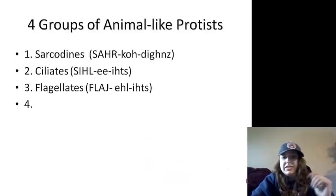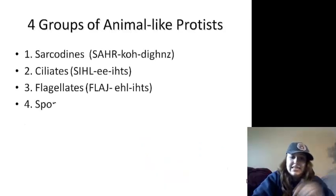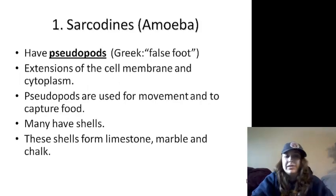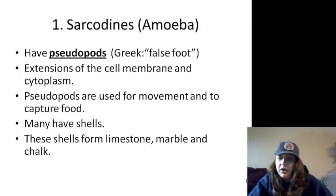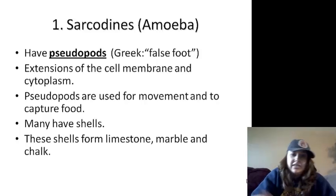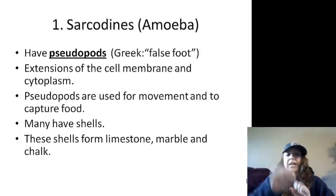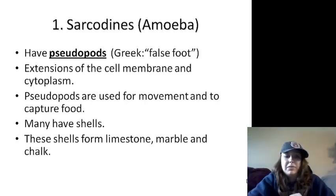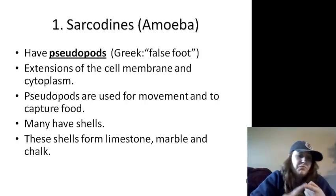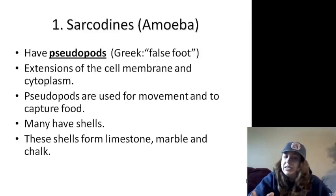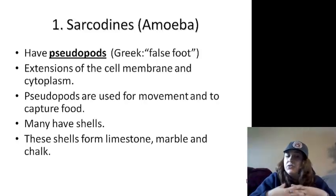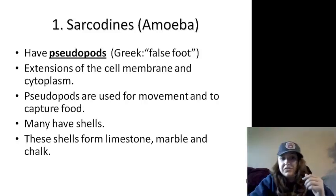We've got four groups: sarcodians, ciliates, flagellates, and sporozoans. Sarcodians — the amoeba — use pseudopods, which are false feet. They are extensions of the cell membrane and the cytoplasm, used for movement and capturing food. Do you remember what it's called when they surround food to capture it? Phagocytosis.